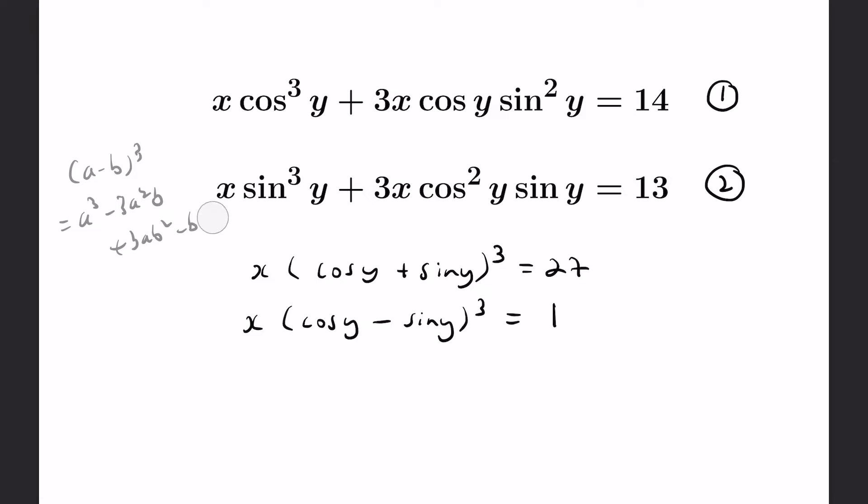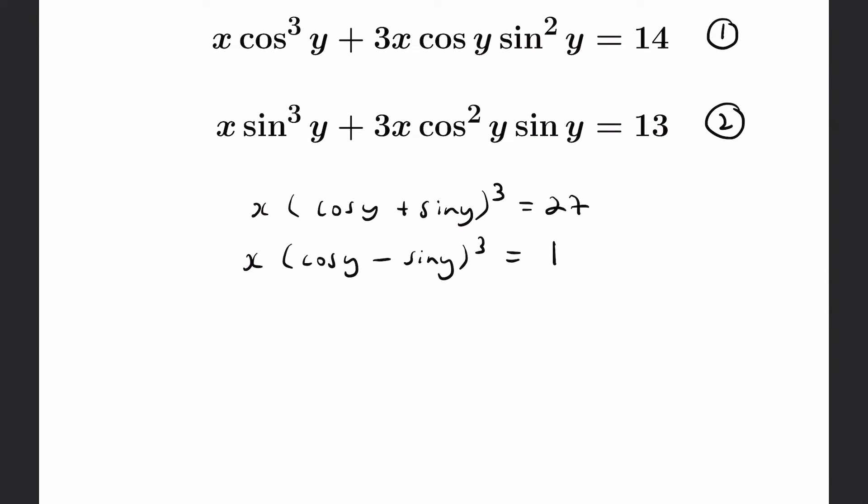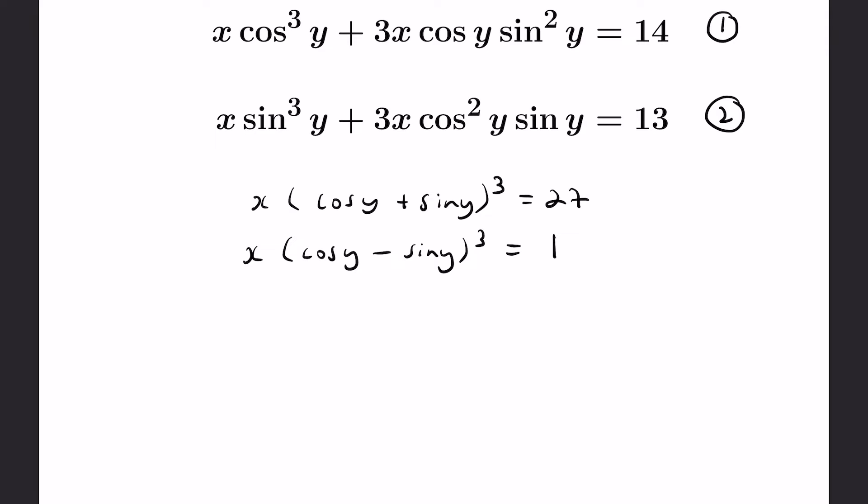Okay, so now the question is what do we do with these two equations that we have left? Well, the variable x is causing some kind of disturbance, but we can eliminate it by dividing these two quantities. Now if we divide, we'll still have these expressions in cosine y and sine y, but there's actually something really nice that you can take advantage of.